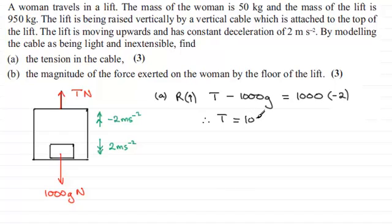So T equals 1000g minus the 2000 here. Now if you take g to be 9.8, then you'll find that therefore T turns out to be 7800 and that'll be measured in newtons.